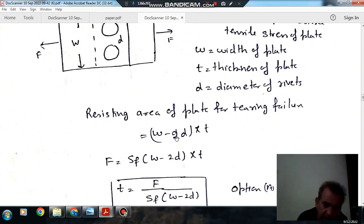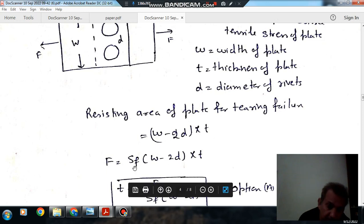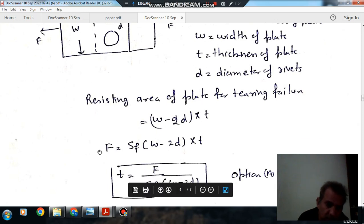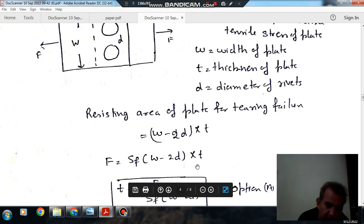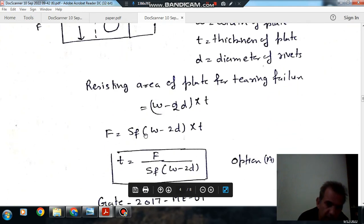So that is the area responsible and the maximum allowable stress is SF. So the stress into area is load, so that is F. So from this we can find out T. So T comes out as F divided by SF bracket W minus 2D.